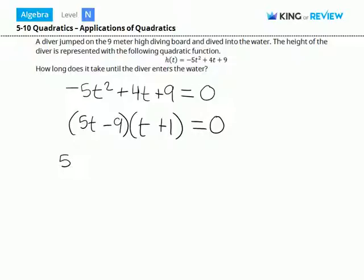To solve for t, we'll set each of these terms equal to zero. So we have five t minus nine equals zero and t plus one equals zero.